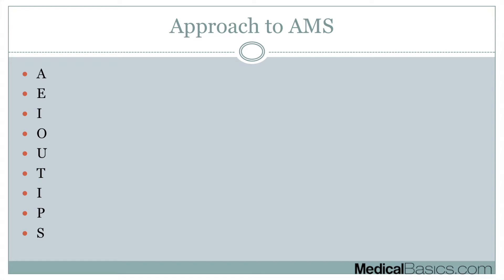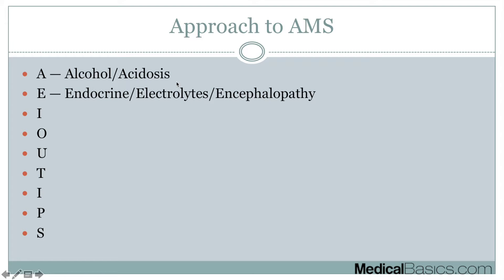The mnemonic is AEIOU TIPS, and every single letter stands for a different thing. The first letter, A, stands for alcohol and acidosis. Alcohol is an obvious reason why someone could be altered. Acidosis can be either respiratory or metabolic — respiratory due to something that reduces respirations, or metabolic due to lactic acidosis, diabetic ketoacidosis, or renal impairment. A lot of these will overlap, but it's a good approach to think about different causes.